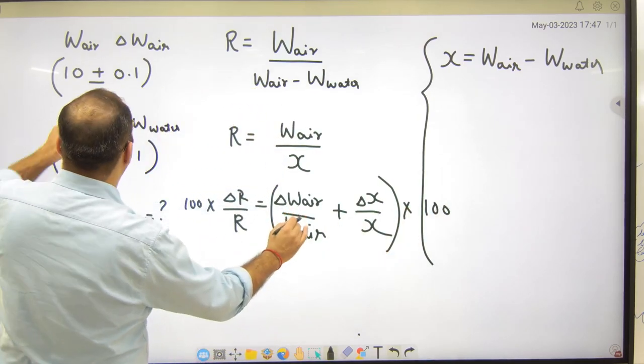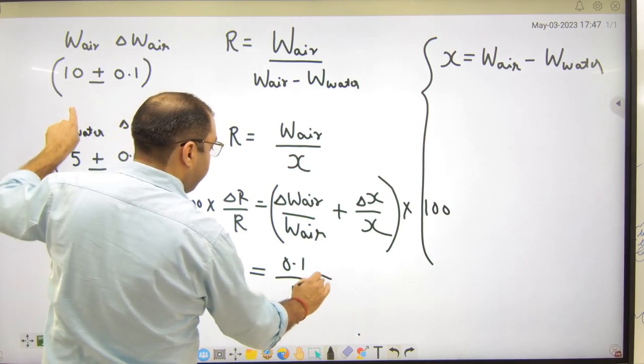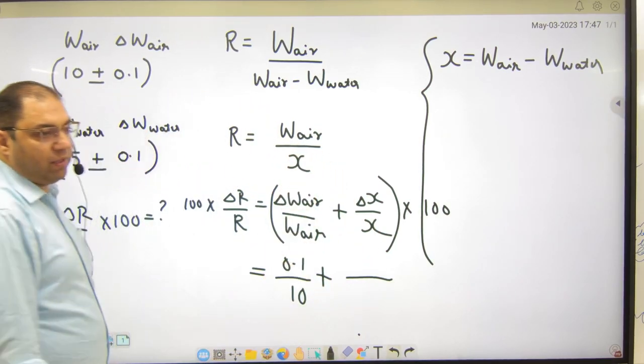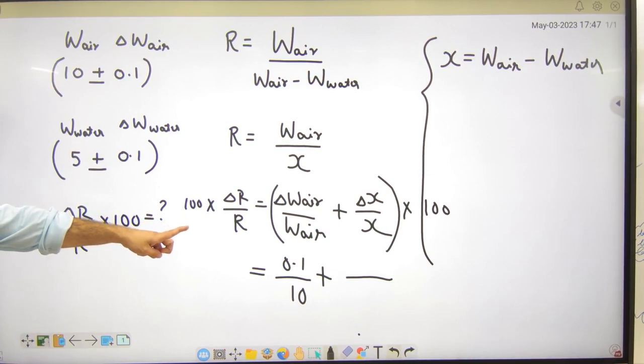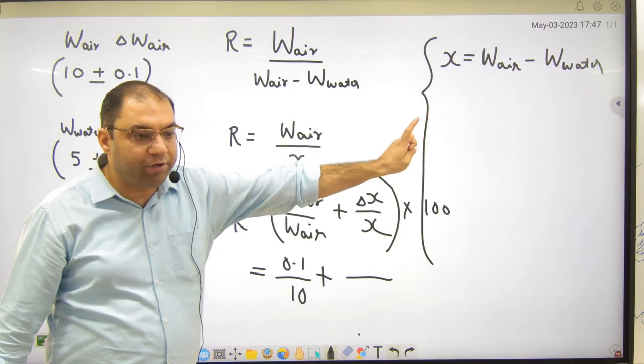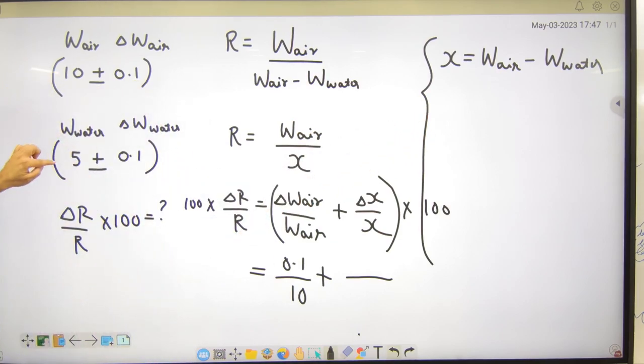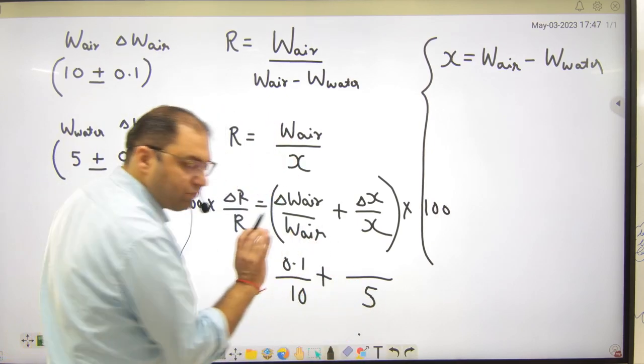To delta w air 0.1 hai, 10 hai. Yeh batao x kya hai ismei? Bolo x ki value ismei kya put karo? Kitna? 10 plus 5, 10 minus 5. Kyunki x ka matlab kya hai? W air minus w water. To air minus water. 10 minus 5? 5. To kya ye point clear hai? Yaan par kya hai ga? 5. Thik?